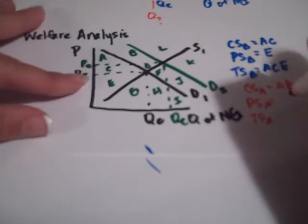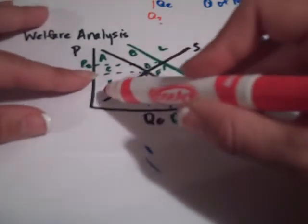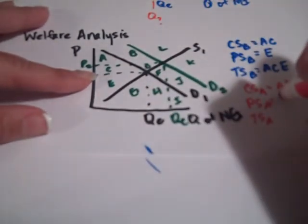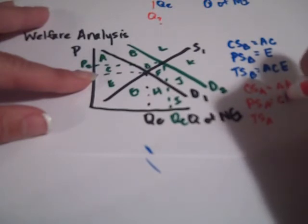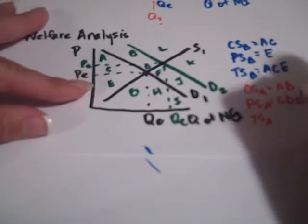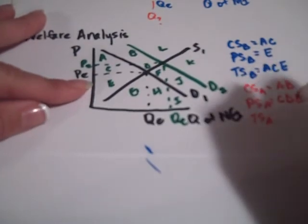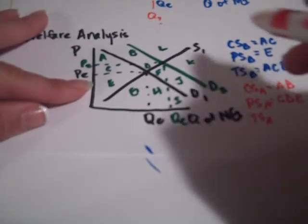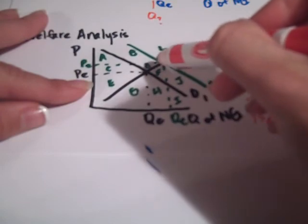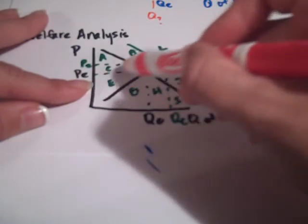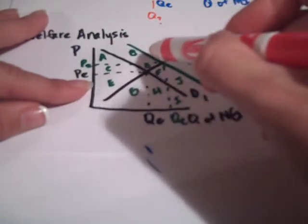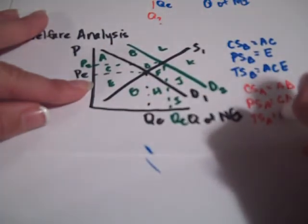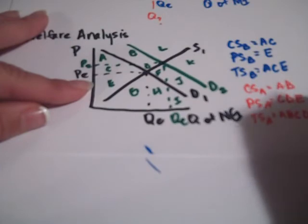Producers have actually increased their surplus a little bit here. Now we have the area below the price and above the supply curve. So their area is C, D, E. Total surplus now is all of this area below the demand curve and above the supply curve, this huge triangle. So it would be A, B, C, D, and E.